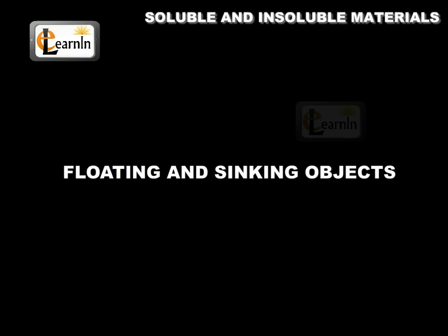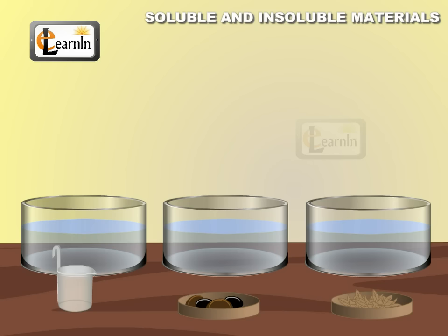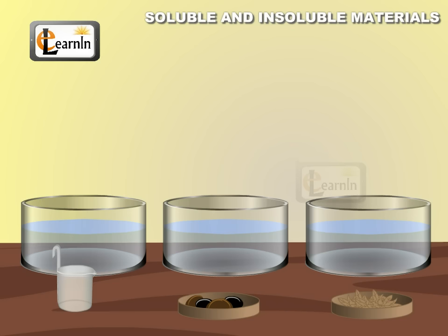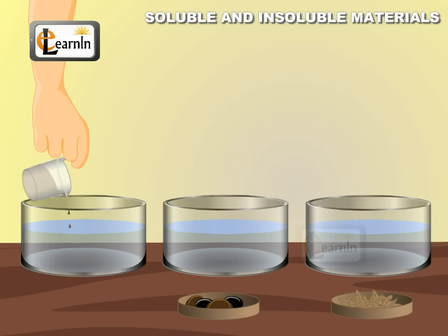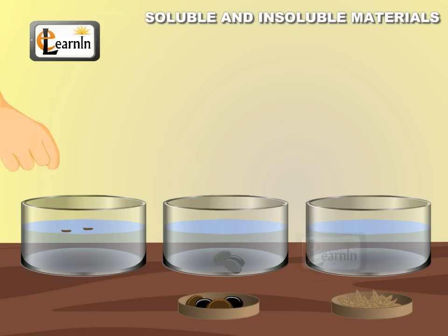Floating and Sinking Objects. There are some objects that float in water and some that sink. Take three glasses of water. In separate beakers, take oil, small pebbles, and dry leaves. Add all three materials to the three glasses respectively.